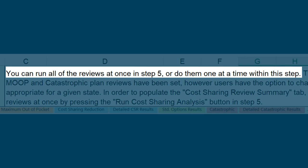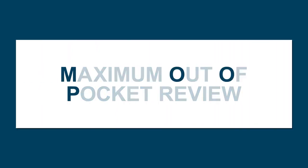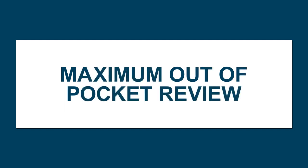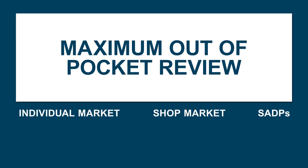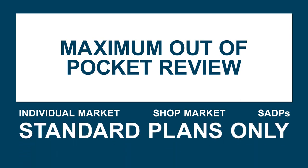The first review in the Cost Sharing Tool is the Maximum Out-of-Pocket, or MOOP Review. The MOOP Review ensures that the plan's MOOP values are within the allowable limits. The MOOP limits are market-wide standards that apply to all plans. The MOOP Review only checks standard plans, not plan variations.